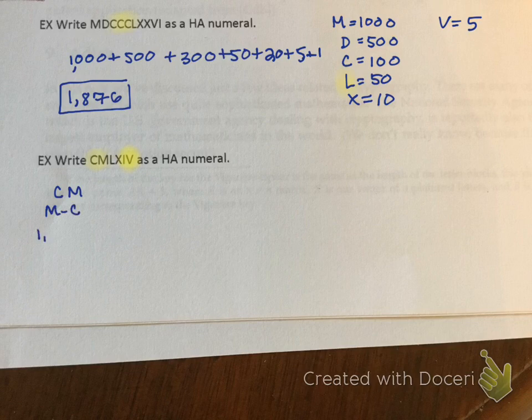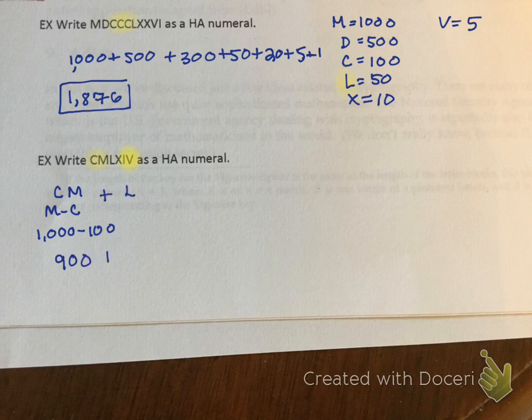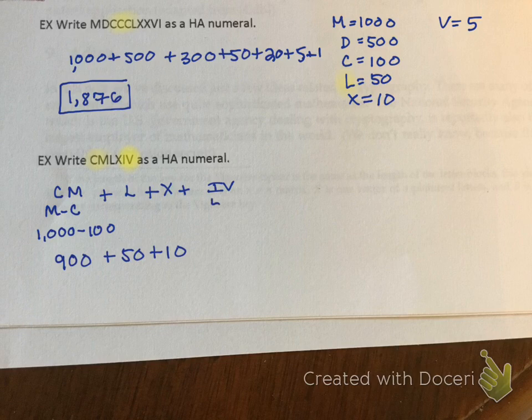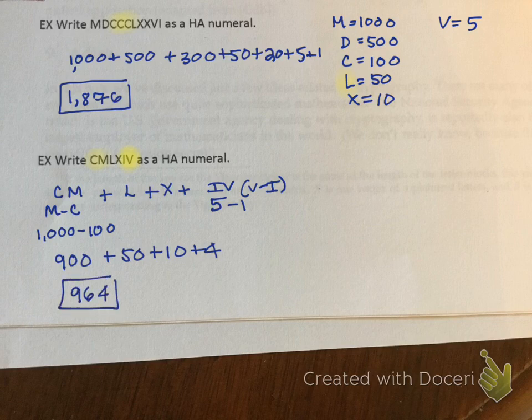I've highlighted the subtraction. CM means I have M minus C. Remember, the order's reverse. M is 1,000 minus C, which is 100, that gives me 900. Then I had L, which is 50. Then I had X, which is 10. And then I had IV. I is smaller than V, so I need V minus I, that's 5 minus 1, which is 4. If I add this together, I get 964. This is a great example of subtraction. How do I know it's subtraction? Because the value in front of the next one is smaller.